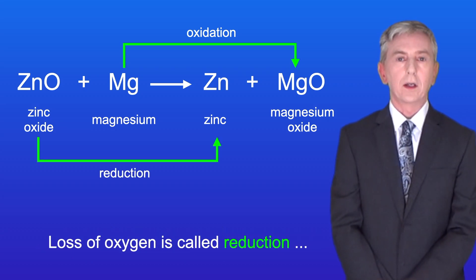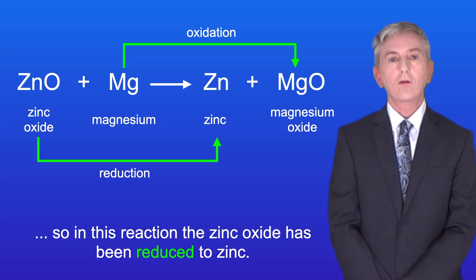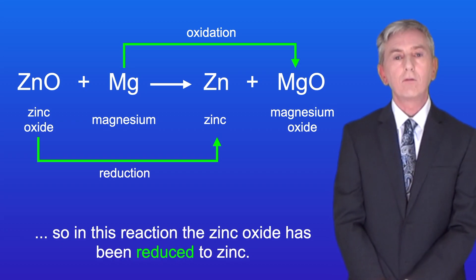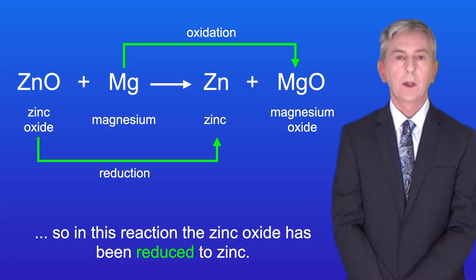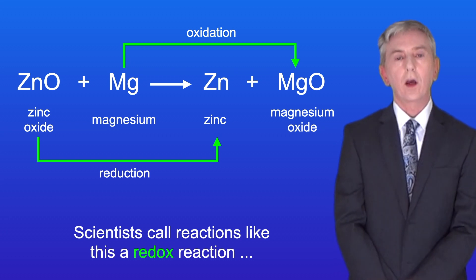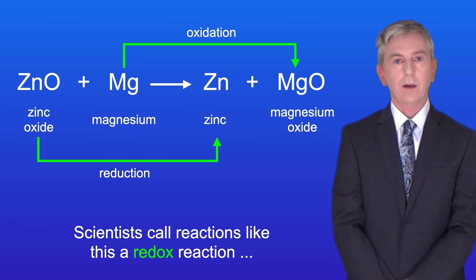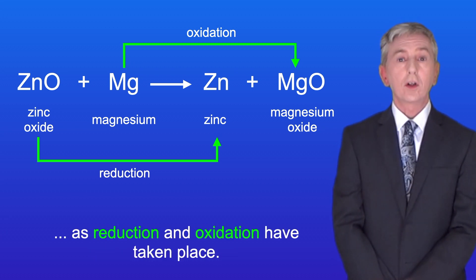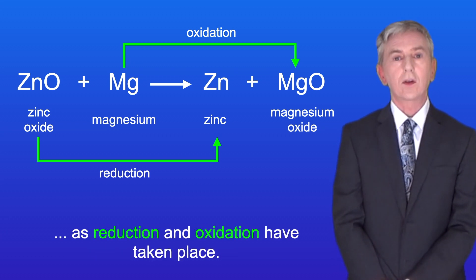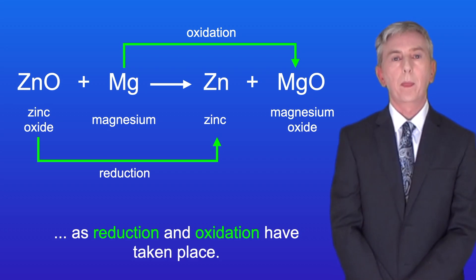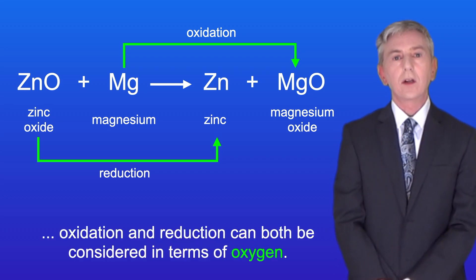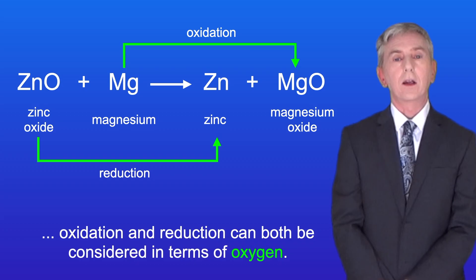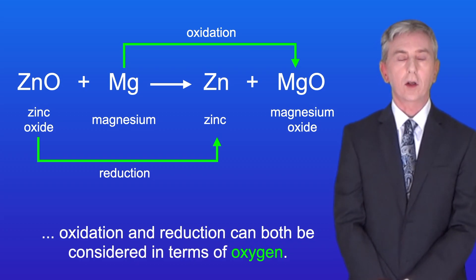Loss of oxygen is called reduction, so in this reaction the zinc oxide has been reduced to zinc. Scientists call reactions like this a redox reaction, as reduction and oxidation have both taken place. So as you can see, oxidation and reduction can both be considered in terms of oxygen.